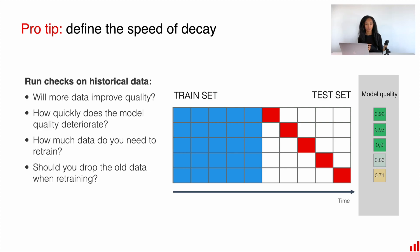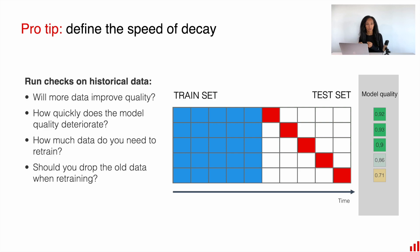Together with the speed of model decay, you can measure things like how much data you need to retrain your model, whether more data actually improves model quality, whether you should drop the old data when retraining, or combine old training data with the new batch. Maybe you should re-weight your objects — for example, down-weight the old training data and set higher weights for data from the new batch. These are experiments you can run on top of your historical data and, based on the results, decide on your optimal schedule.